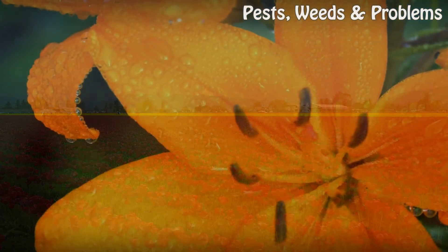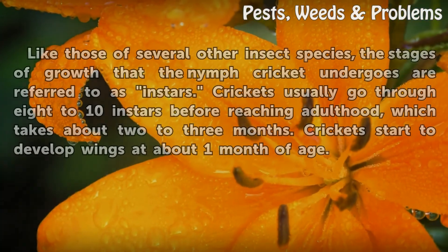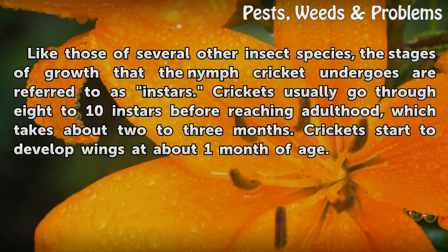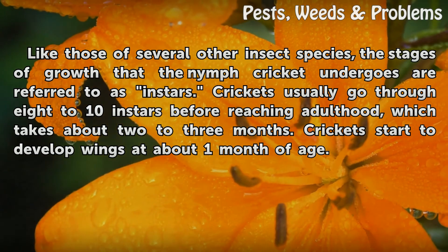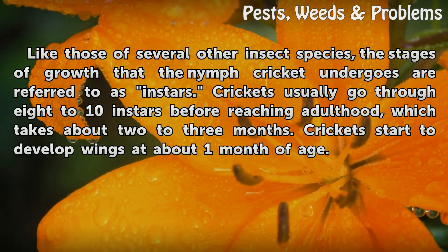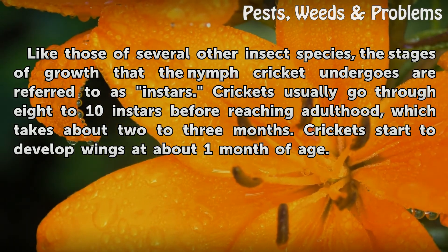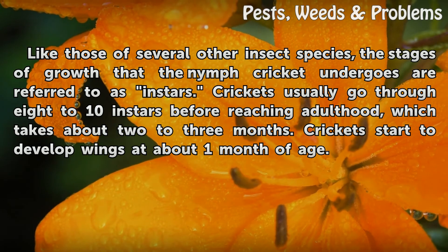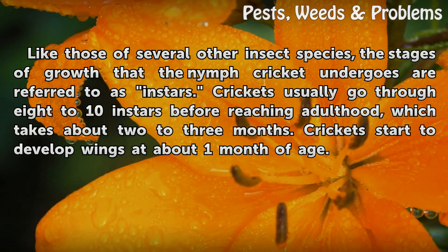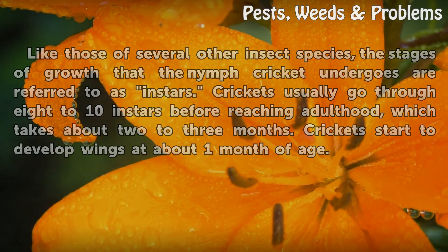Instars. Like those of several other insect species, the stages of growth that the nymph cricket undergoes are referred to as instars. Crickets usually go through 8 to 10 instars before reaching adulthood, which takes about two to three months. Crickets start to develop wings at about one month of age.